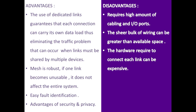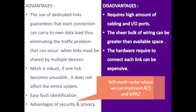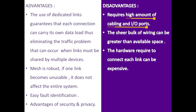Advantages of Mesh Topology: dedicated links guarantee each connection can carry its own data load, eliminating traffic problems that occur when links must be shared by multiple devices. Mesh is robust — if one link becomes unusable, it does not affect the entire system and will find another way to reach its destination. Fault detection is easier in mesh. There is also an advantage of security and privacy, including Wi-Fi mesh routers where WPA2 and AES encryption can be implemented. Disadvantages: it requires a higher amount of cabling and IO ports, the bulk of wiring can exceed available space, and hardware required to connect each link can be expensive.